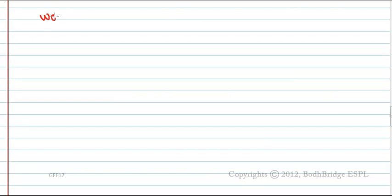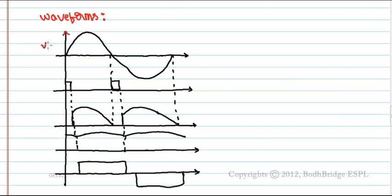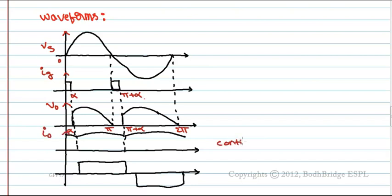Waveform analysis: Vs is the source voltage. Triggering current IZ fires at alpha and pi plus alpha. Output voltage V0 is shown from alpha, pi, pi plus alpha, to 2pi. Output current I0 is continuous. Source current IS flows from alpha to pi and from pi plus alpha to 2pi. In these intervals, freewheeling diode action occurs.